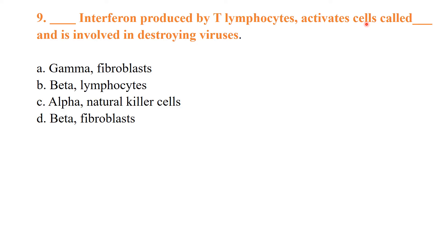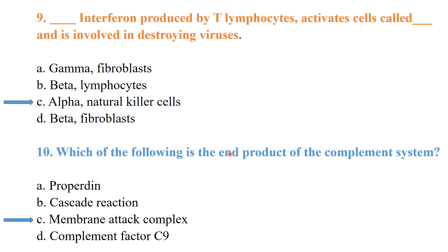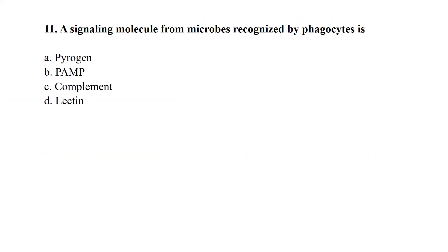Alpha interferon is produced by T lymphocytes and activates natural killer cells involved in destroying viruses. The end product of the complement system is the membrane attack complex.